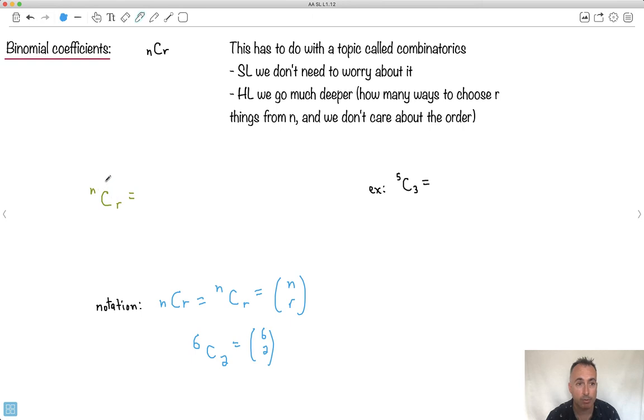We actually have a formula for NCR in our formula booklet, so you don't have to memorize this, but it has to do with factorials. That's why I wanted to give you the definition of a factorial. The formula is n factorial divided by r factorial times (n-r) factorial.